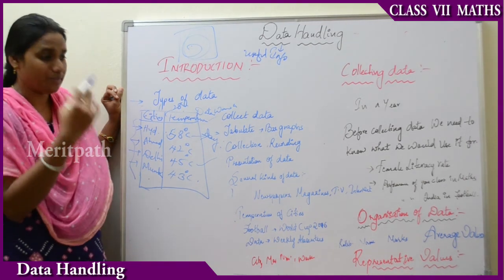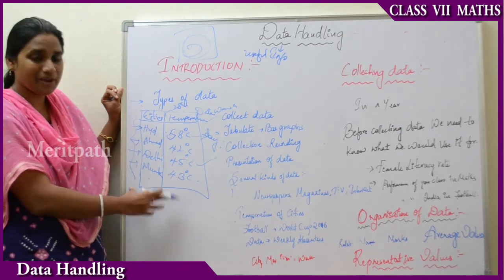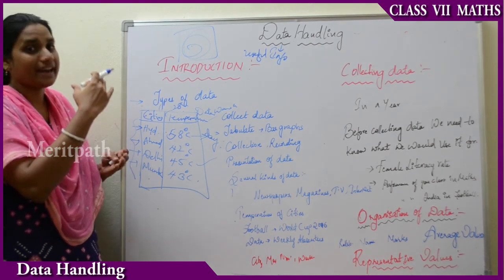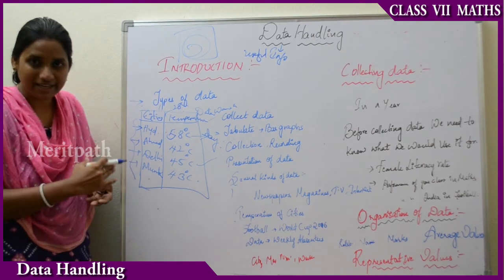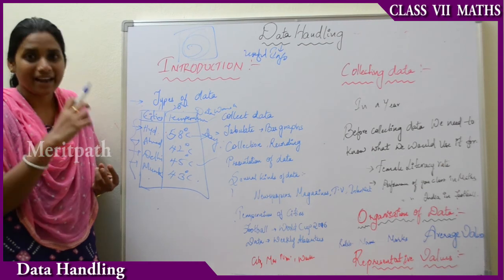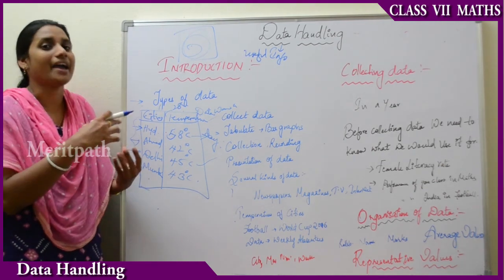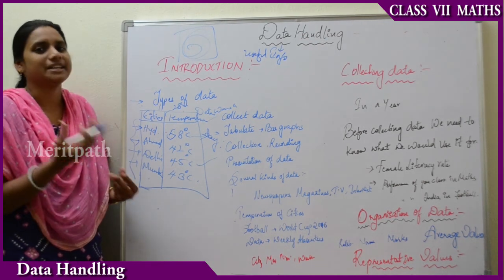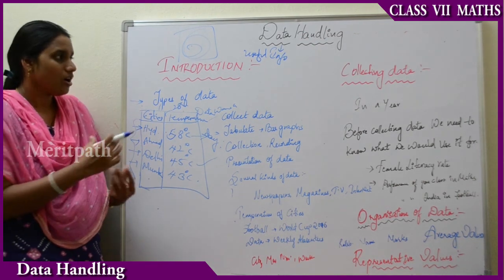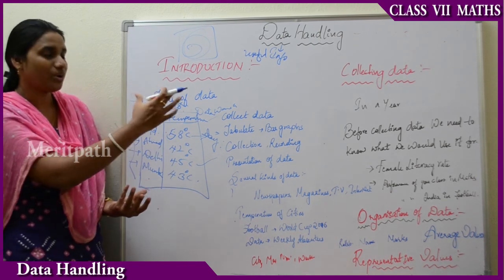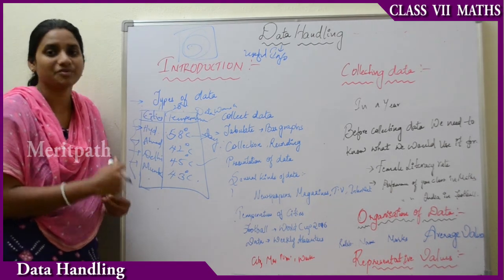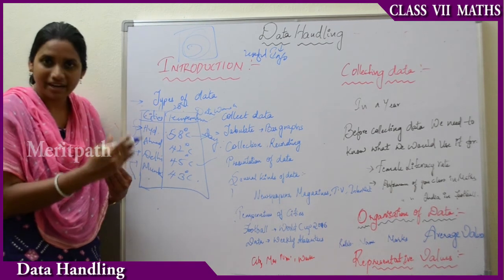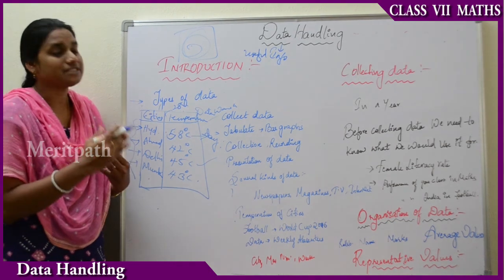That means we have to record it on a daily basis — we have to record the information of each and every day in a particular year. And later we will be arranging the data in order and analyzing which city has the highest temperature and which city has the minimum temperature in a particular year. We will be collecting the temperature of every city, on every day, in every month, in every year.